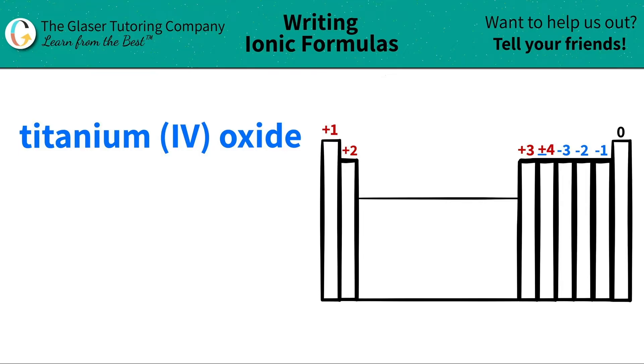Today, we are going to be writing the formula for the ionic compound titanium four oxide. So let's see where these elements are located on the periodic table, and then we can write the formula from there.